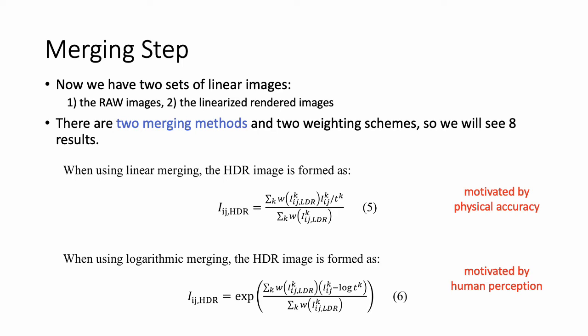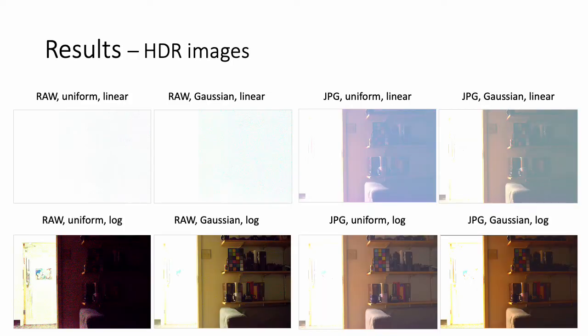The first is linear merging, which is motivated by physical accuracy. And the second is logarithmic merging, which is motivated by human perception. These are the results. With JPG images and logarithmic merging, the HDR images are well-constructed. The results of linear merging seem very bad and noisy, but the evaluation result may not be bad in the perspective of physical accuracy.